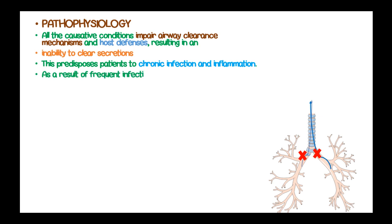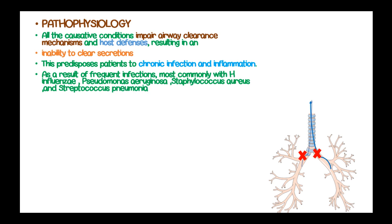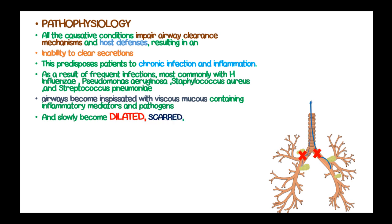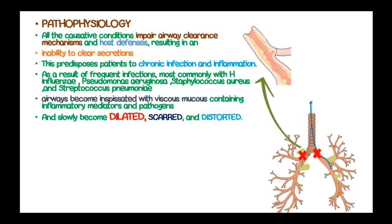As a result of frequent infections — most commonly with Haemophilus influenzae, Pseudomonas aeruginosa, Staphylococcus aureus, and Streptococcus pneumoniae — the airways become impacted with viscous mucus containing inflammatory mediators and pathogens, and slowly become dilated, scarred, and distorted.